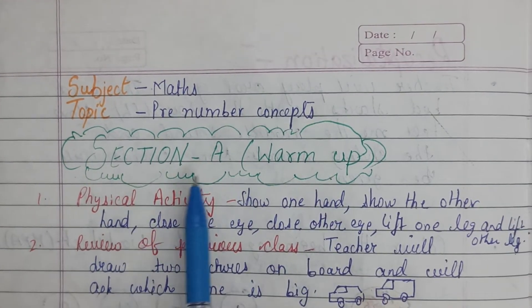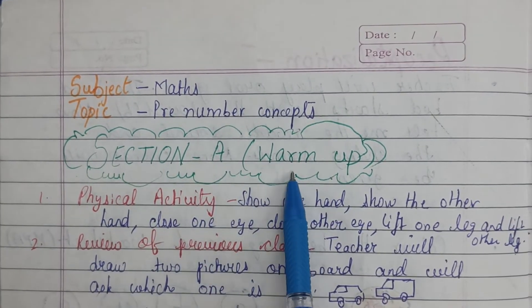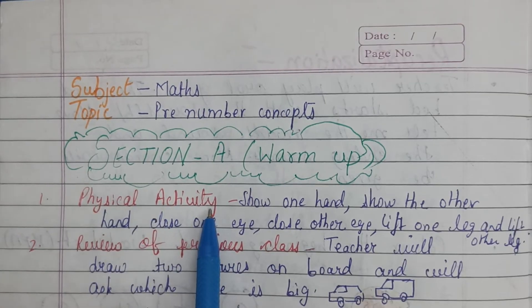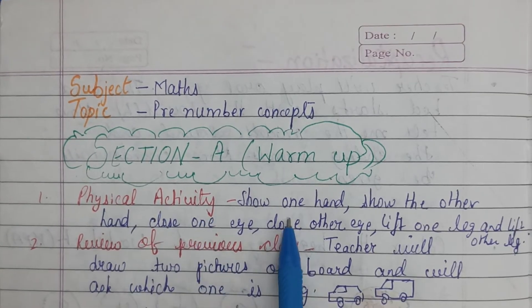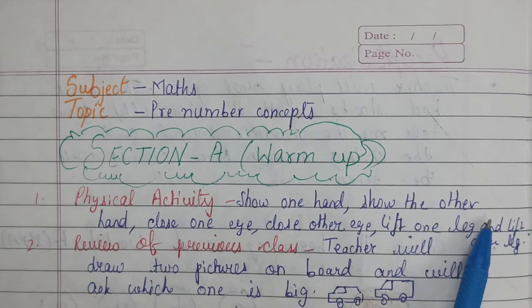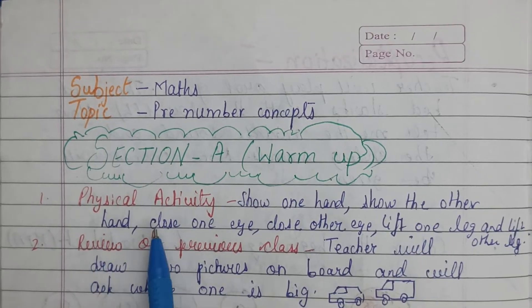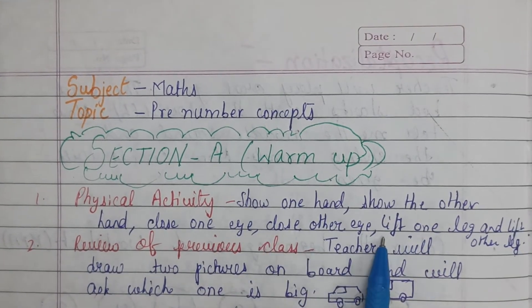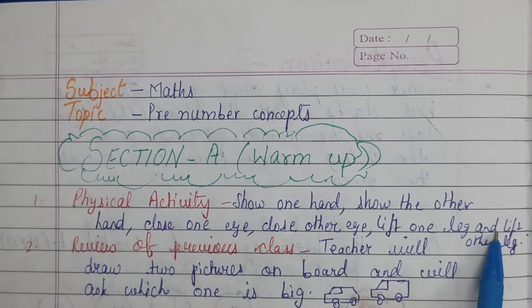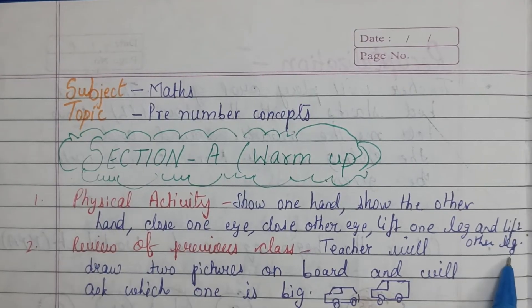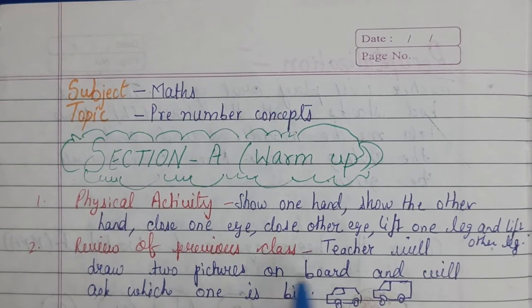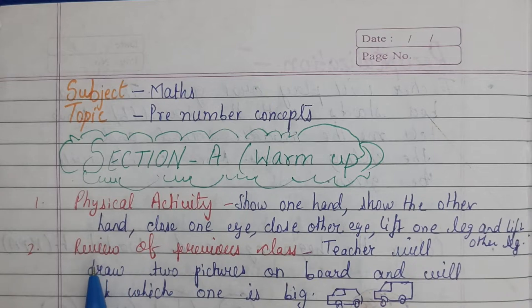Section A is warm up. You can do physical activities in your classroom like show one hand, now show the other hand, close one eye, close the other eye, lift one leg and lift the other leg. Any other activity you can also do in your classroom.